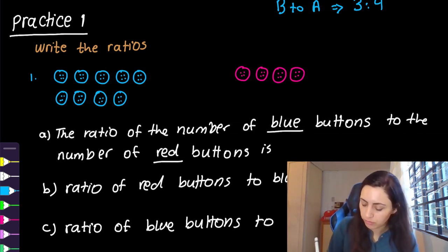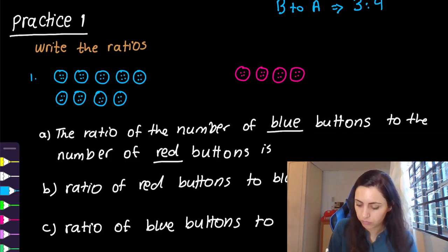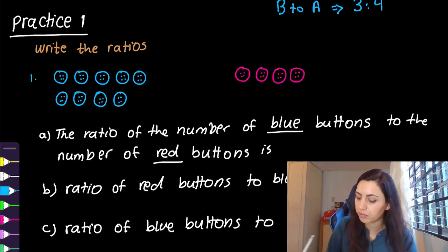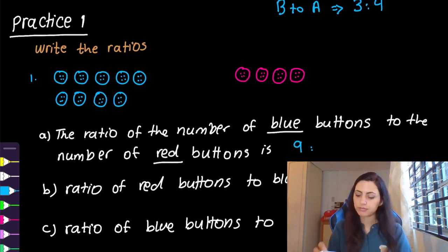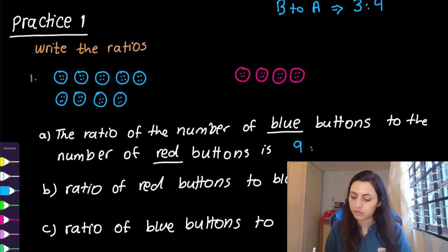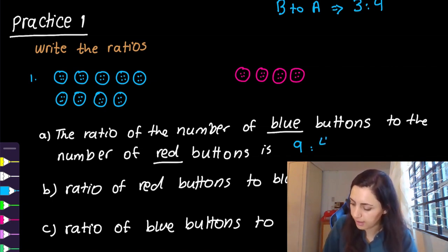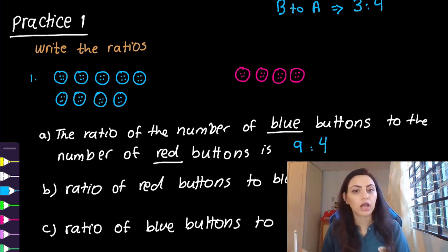We said blue first, so we count the blue buttons: one, two, three, four, five, six, seven, eight, nine — we have nine blue buttons, so we write nine first and put the two dots. Then the red buttons: we have four. So it's nine to four.